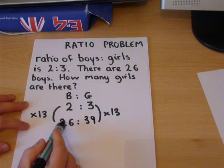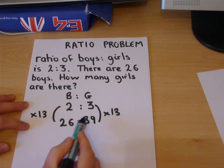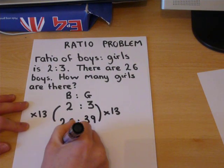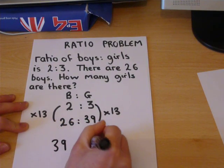So there are 26 boys and 39 girls. So how many girls are there? There are 39 girls.